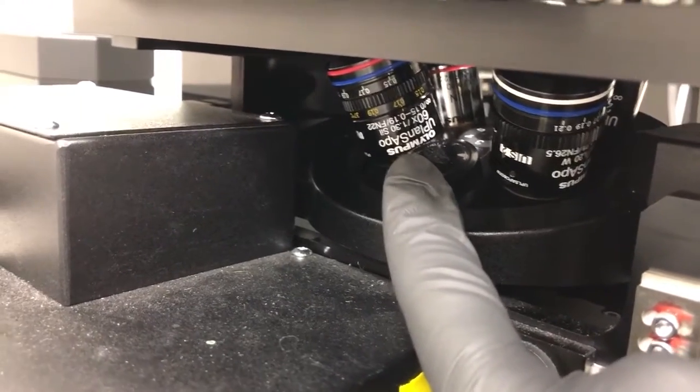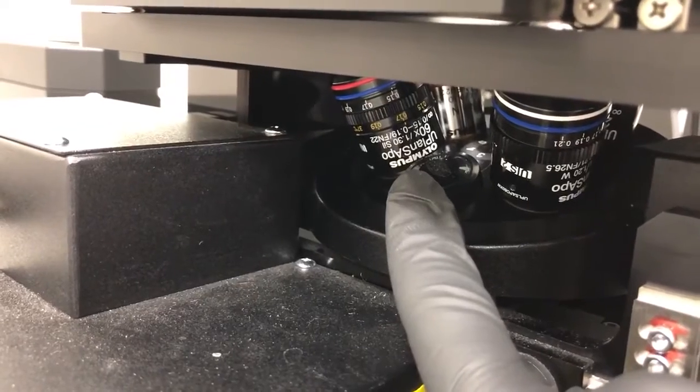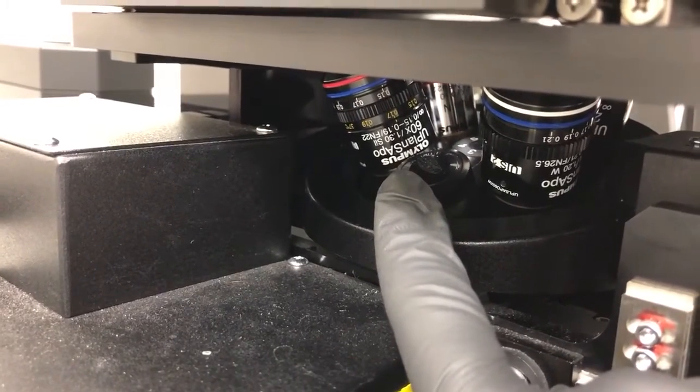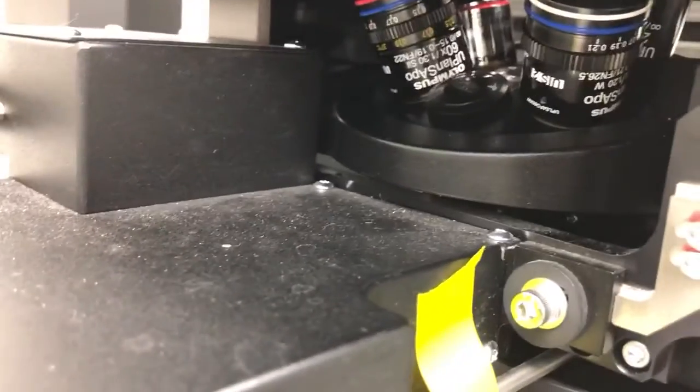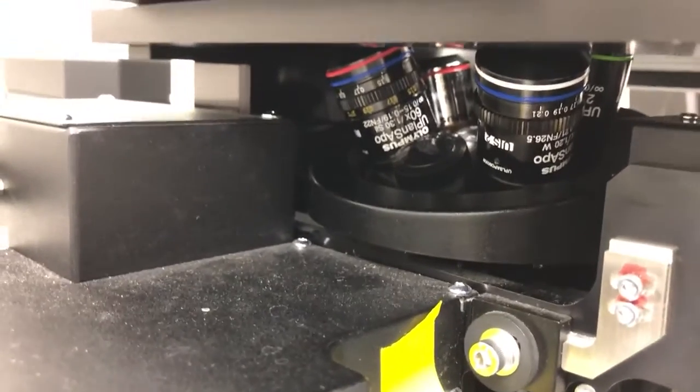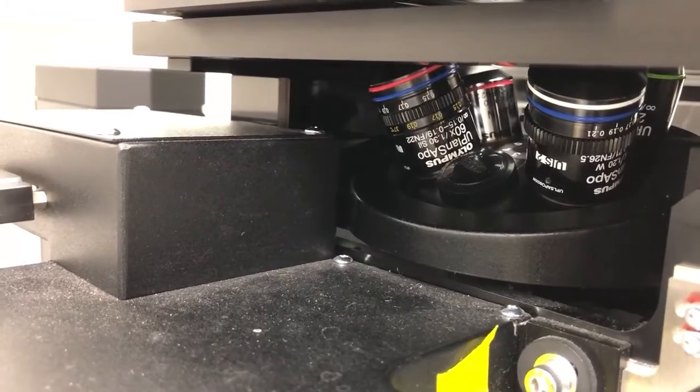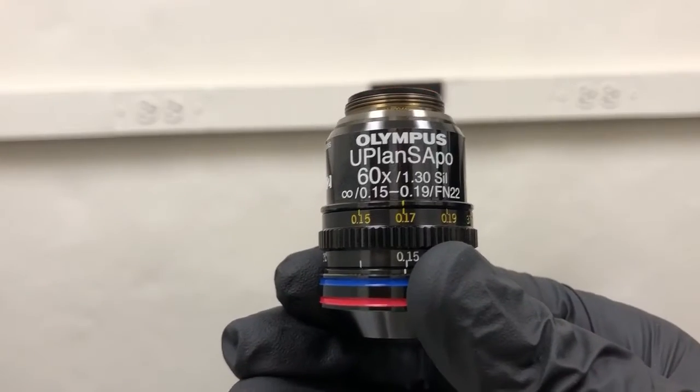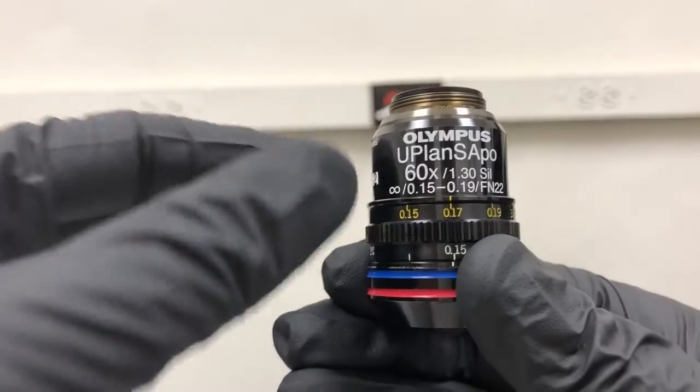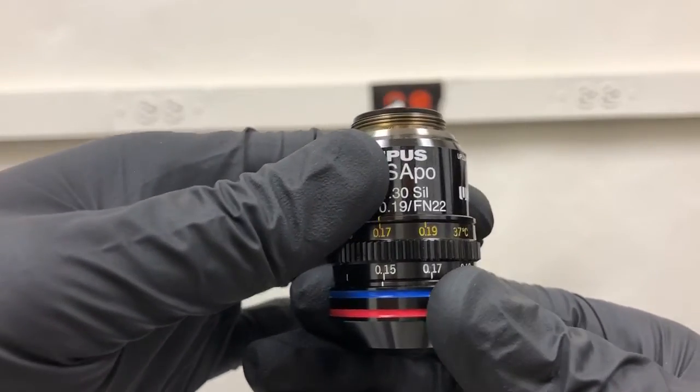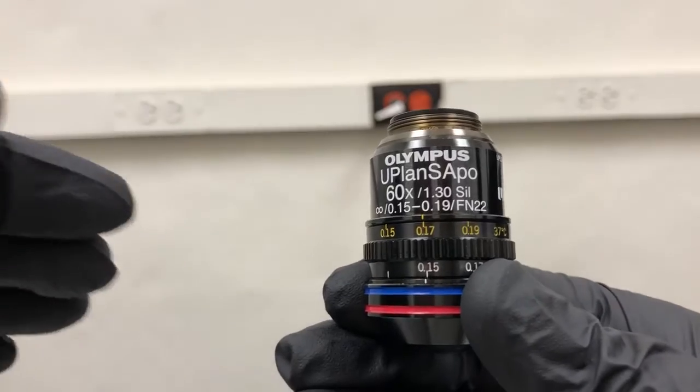I'm going to remove it from the microscope and show you how those markings look up close, so then you know what you're looking for when you're peering down the side of the microscope. I've removed the 60x oil objective from the microscope just so you can see what the markings look like and what it is that you're going to be adjusting if needed.